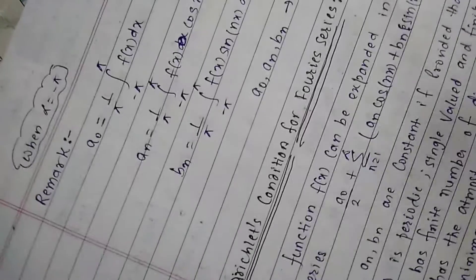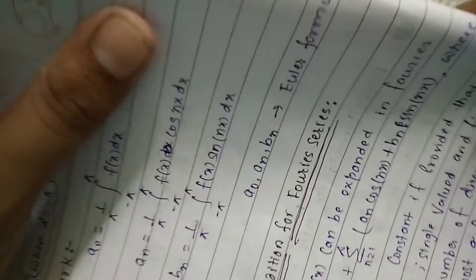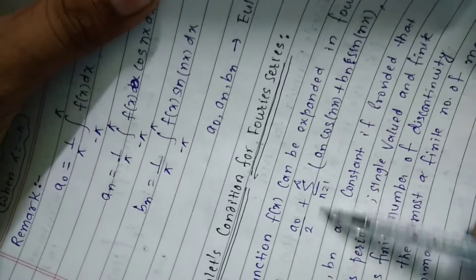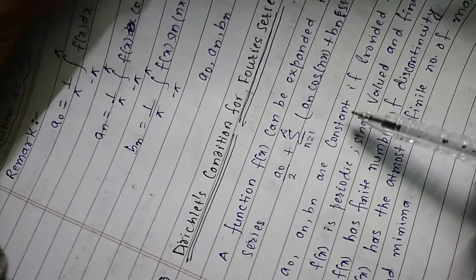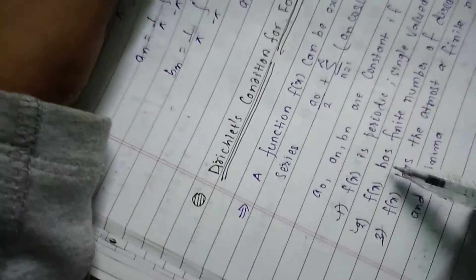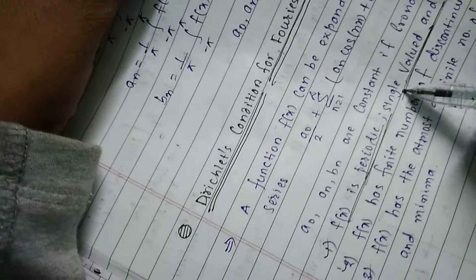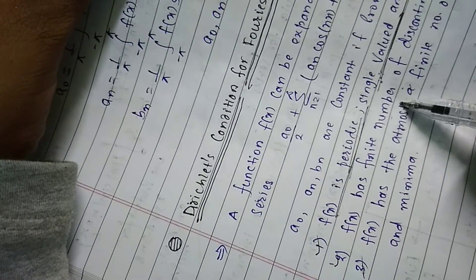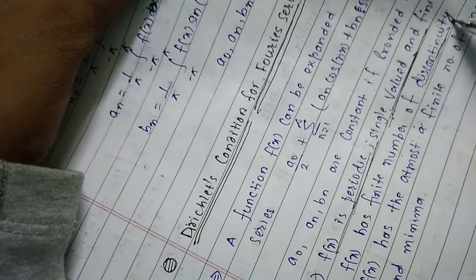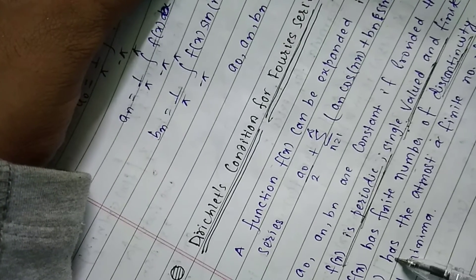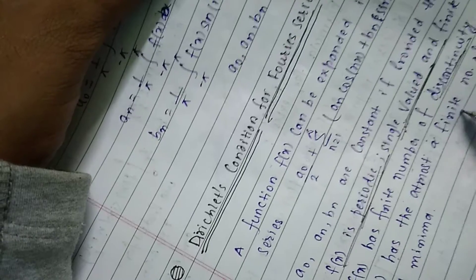The Dirichlet's conditions for Fourier series state that f(x) can be expanded in a Fourier series if three conditions are fulfilled: (1) f(x) is periodic and single-valued — meaning at each point you get a single value; (2) f(x) has a finite number of discontinuities; (3) f(x) has at most a finite number of maxima and minima.